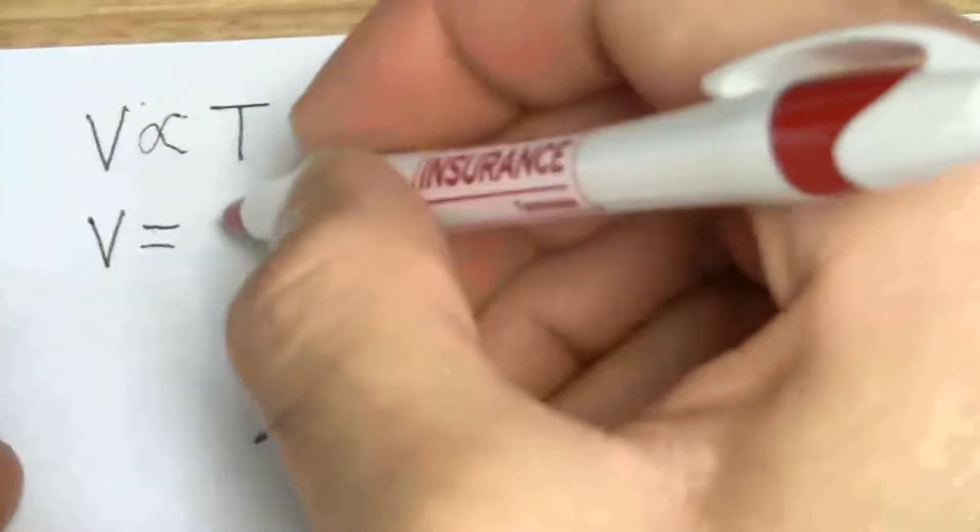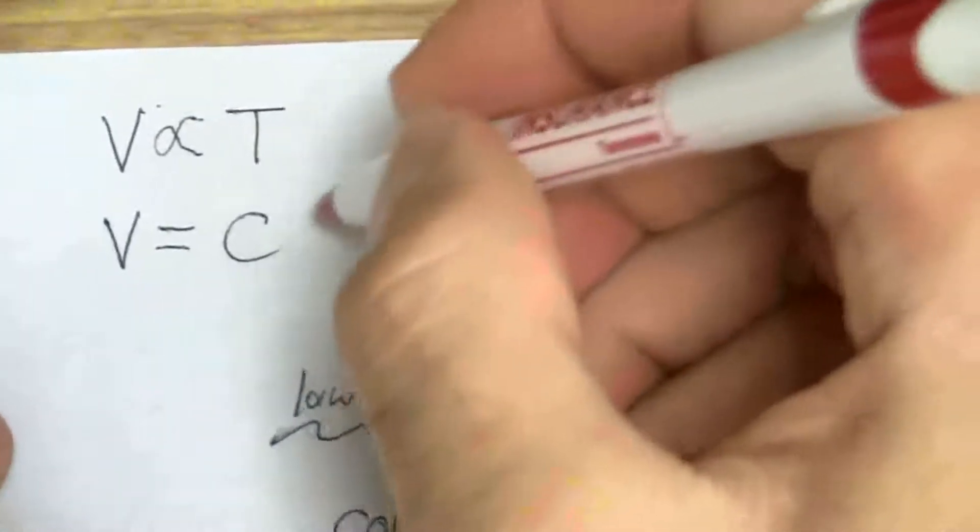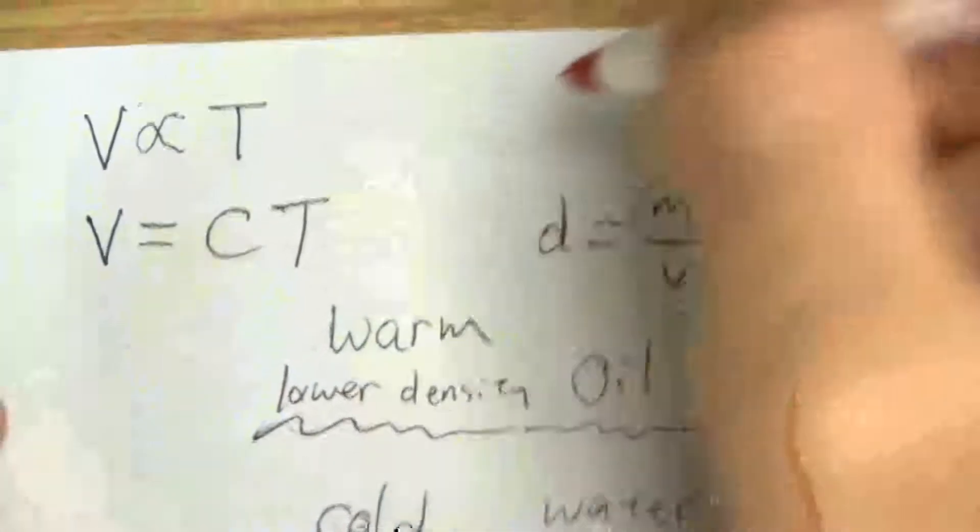Or I can write this as volume equals some constant. I don't care what the value of that constant is. Some constant times the temperature.